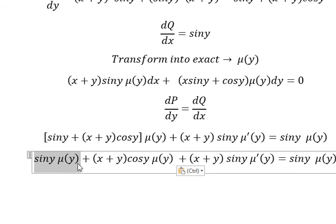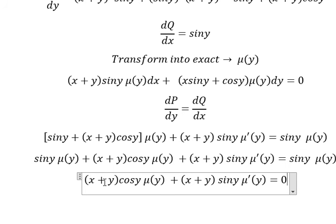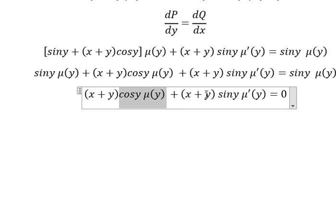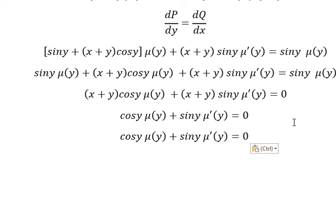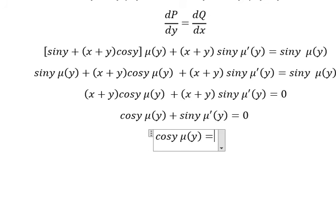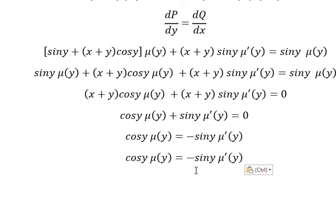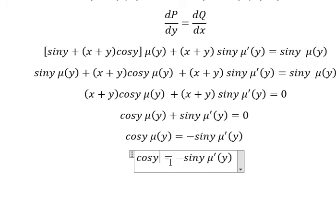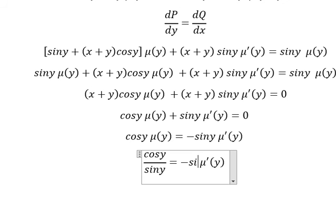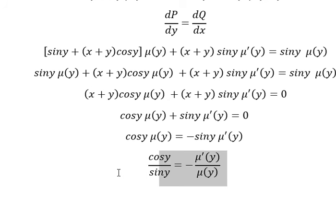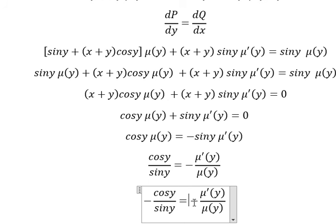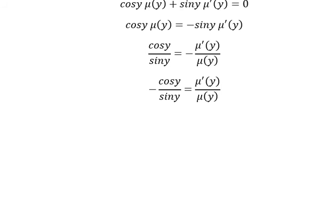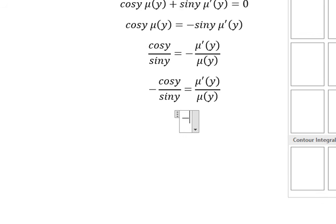We cancel matching terms on both sides, leaving a simplified equation. Next, we divide both sides by sin(y) and μ(y), then move the negative sign to the left side.